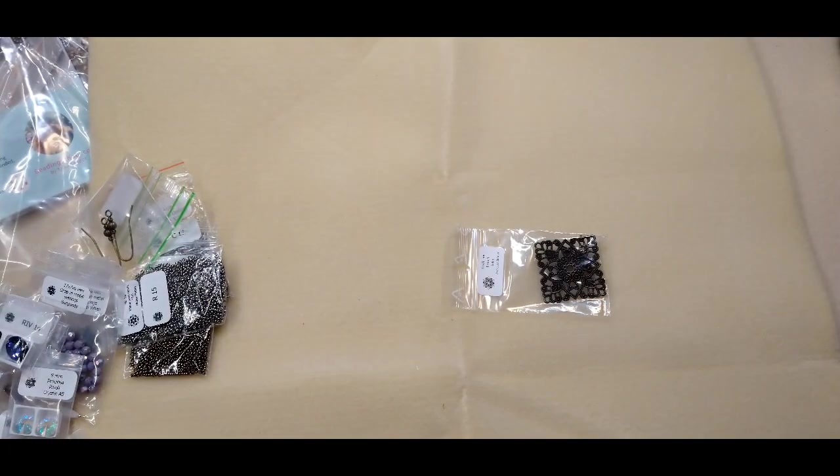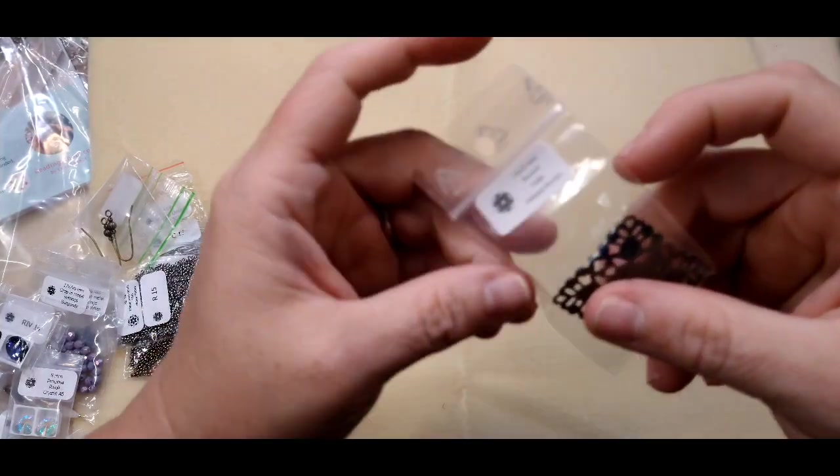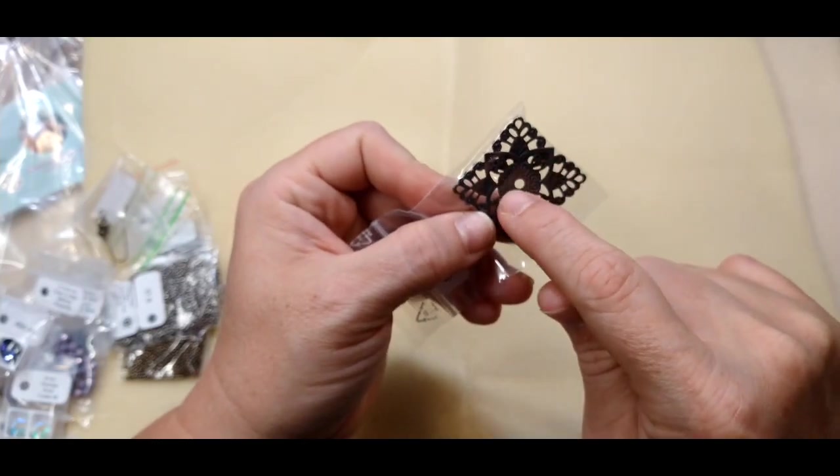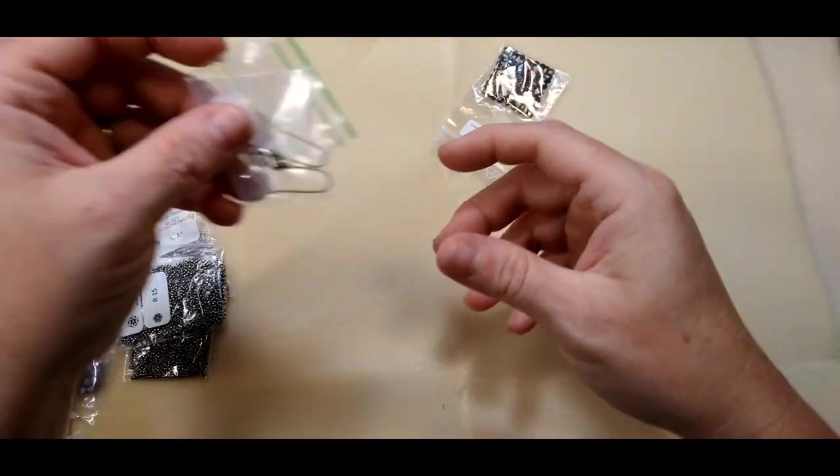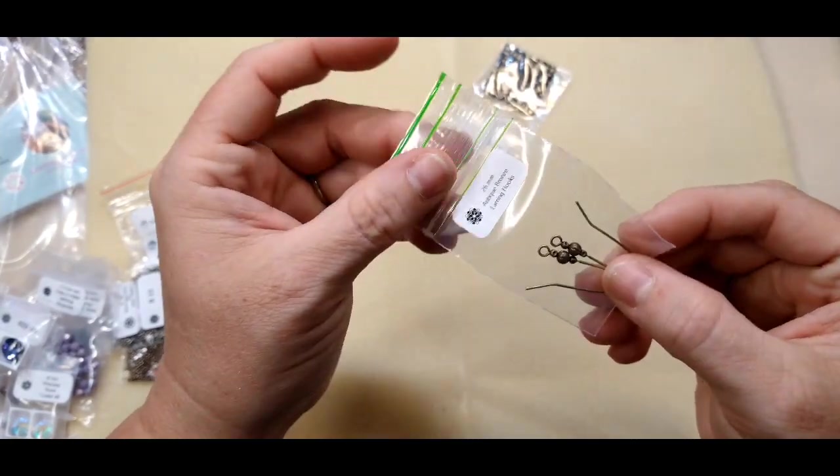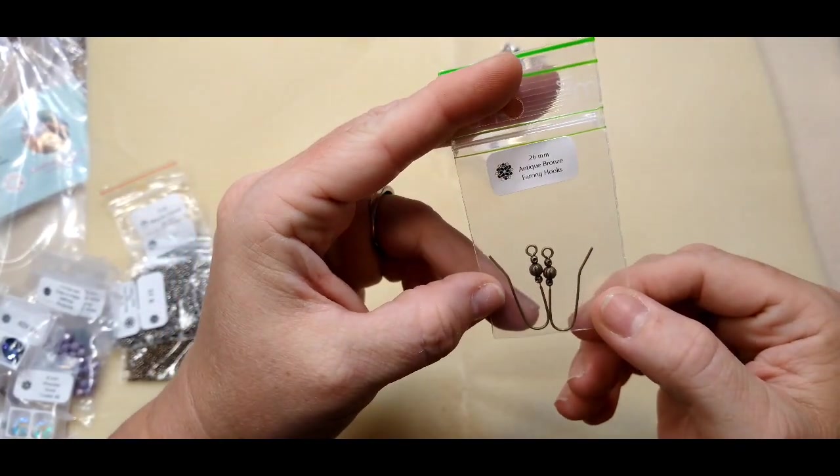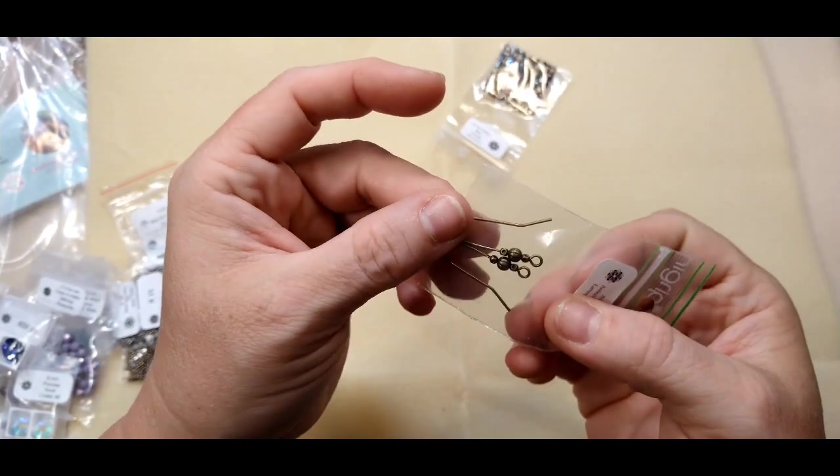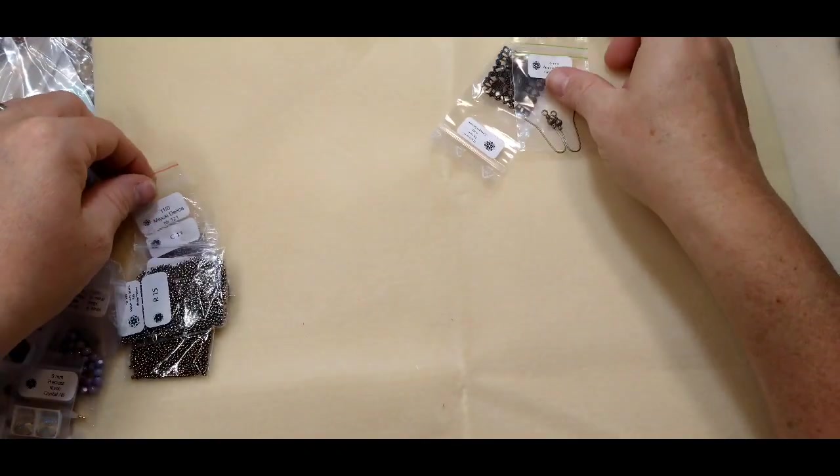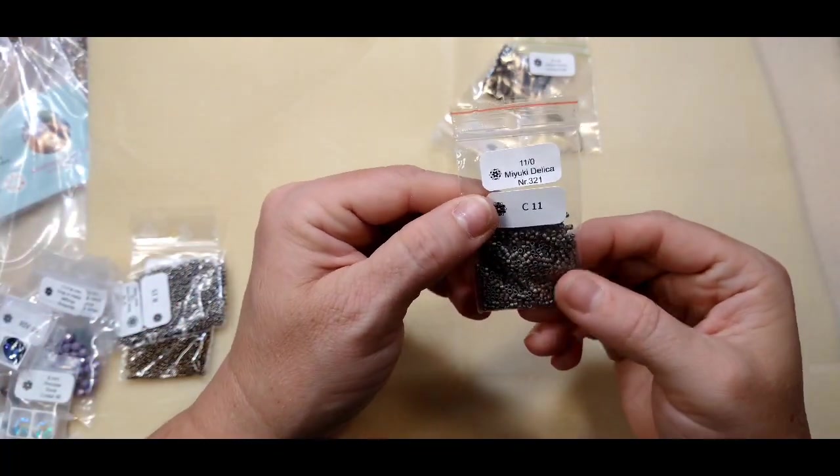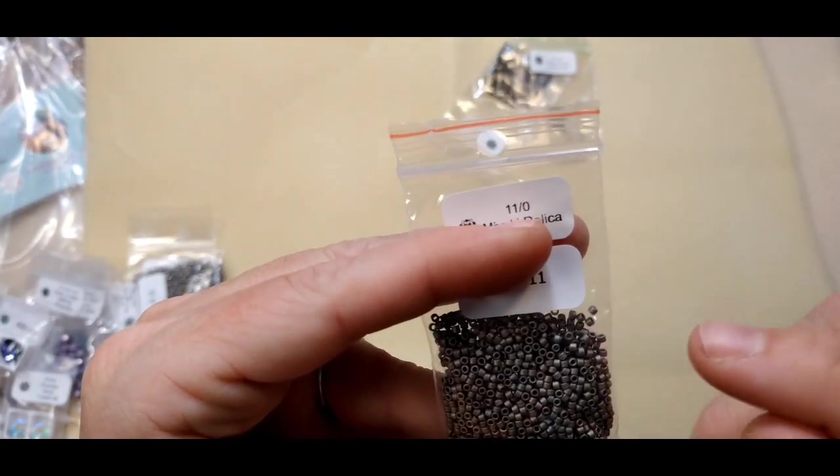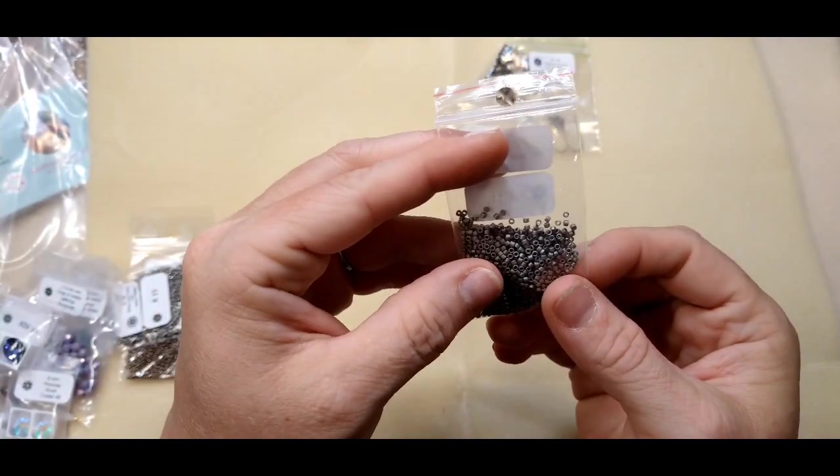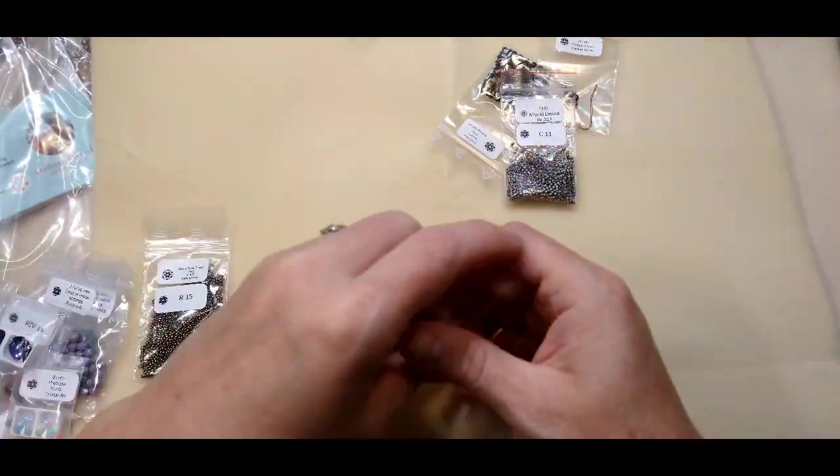So this is a 31 by 31 millimeter brooch tulip antique bronze. Let me grab my glasses because I can't read that anymore. So it is a brooch and this is what you would be putting your rivoli on. She's included two ear hooks in here. Some fish hook ear wires, 26 millimeter antique bronze earring hooks. Those are so cute. We've got 11.0 Miyuki Delicas. Now the Delicas are cylinder shaped beads. They're squares almost, and they nestle within each other really nicely.